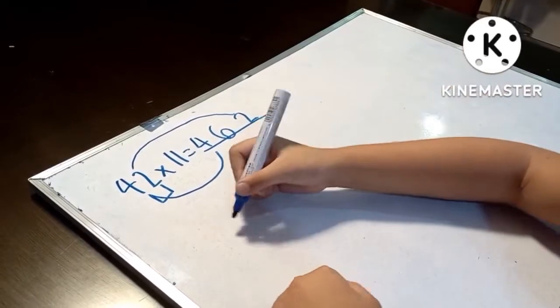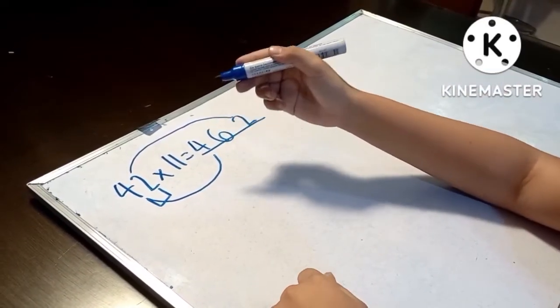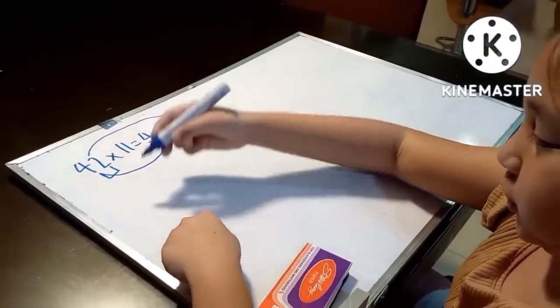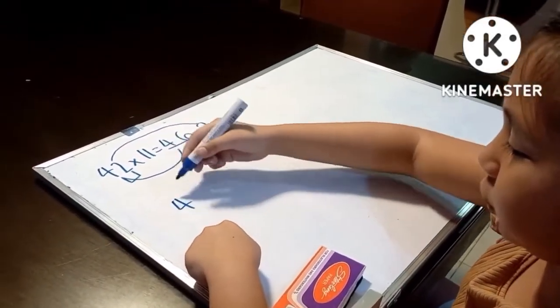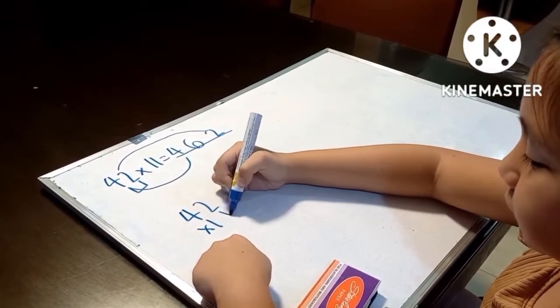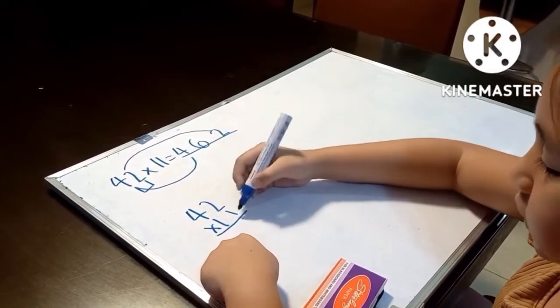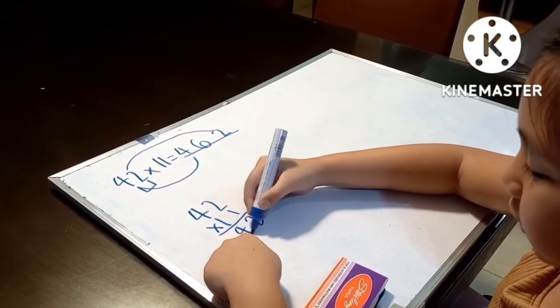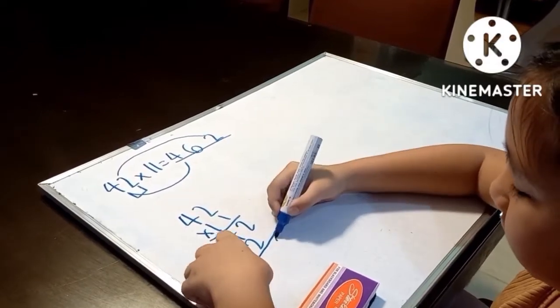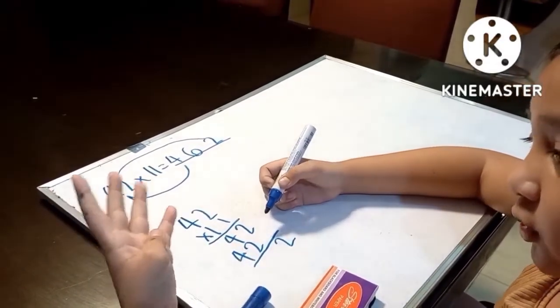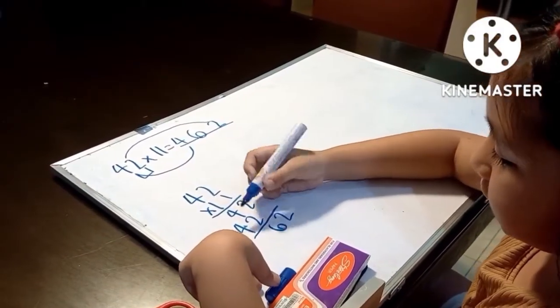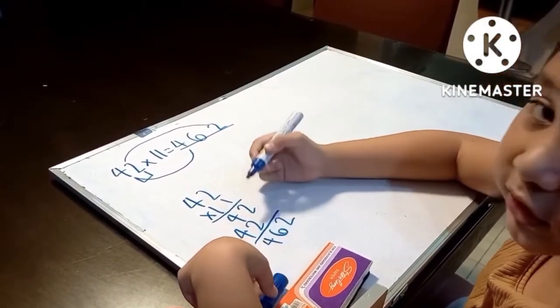So we're going to multiply 42 times 11 to see if our answer is correct. We're going to times 42 times 11 normally. So, six, bring down four. Our answer is correct.